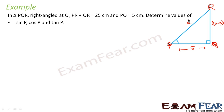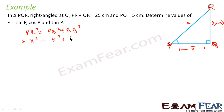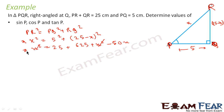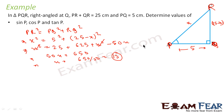To find sin P, cos P, and tan P, we need the value of X. Applying Pythagoras theorem: PR squared equals PQ squared plus QR squared, so X squared equals 5 squared plus (25 minus X) squared. Expanding: X squared equals 25 plus 625 plus X squared minus 50X. The X squared terms cancel, giving 50X equals 650, so X equals 13. Therefore PR equals 13 and QR equals 25 minus 13 equals 12.